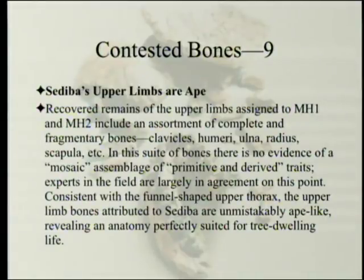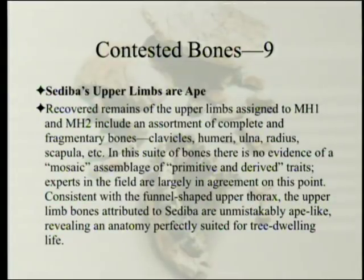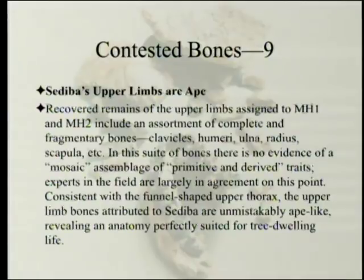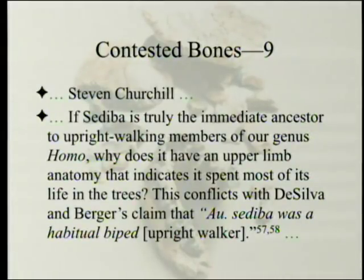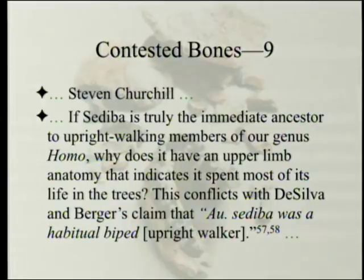Sediba's upper limbs are ape. Recovered remains include an assortment of complete and fragmentary bones — clavicles, humeri, ulna, radius, scapula. In this suite of bones there is no evidence of a mosaic assemblage; the upper limb bones are unmistakably ape-like, revealing an anatomy perfectly suited for tree-dwelling life. Stephen Churchill asks: 'If sediba is truly the immediate ancestor to upright walking members of our genus Homo, why does it have an upper limb anatomy that indicates it spent most of its life in the trees?' This conflicts with the claim that Australopithecus sediba was a habitual biped. Berger writes that sediba had longer, more ape-like arms. Popular science writer Ann Gibbons summarizes: 'The shoulder and arm are primitive and chimp-like. Australopithecus sediba was still spending a lot of time climbing trees.'